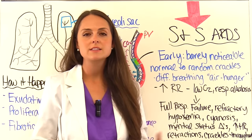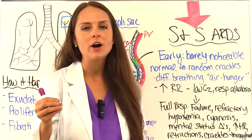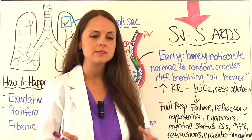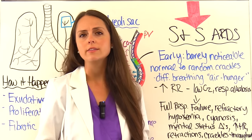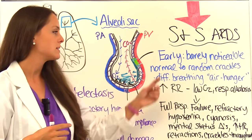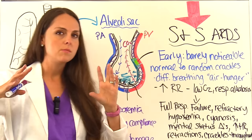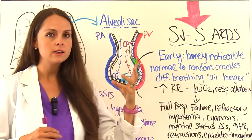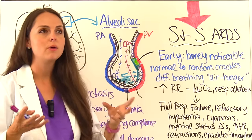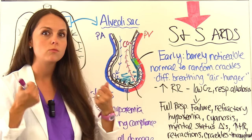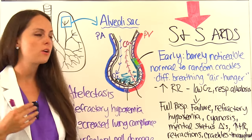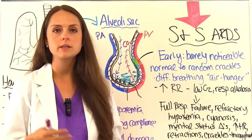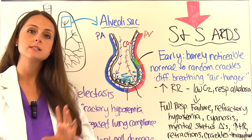Early signs and symptoms of ARDS are very subtle. Lung sounds may be normal or have only a random crackle here and there because the fluid is still just in the interstitium. As it moves into the sac, you'll see difficulty breathing, air hunger, increased respiratory rate, low oxygen saturation, low arterial oxygen level, and respiratory alkalosis in the beginning.